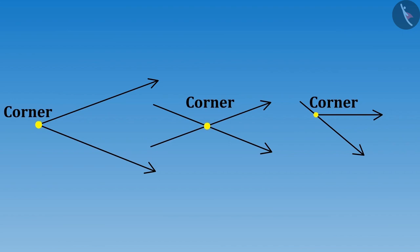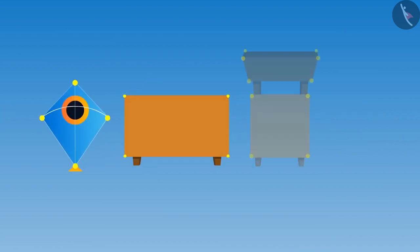So sister, does this mean that corners are only formed in objects like kite, table and a chair?